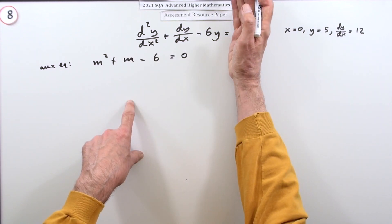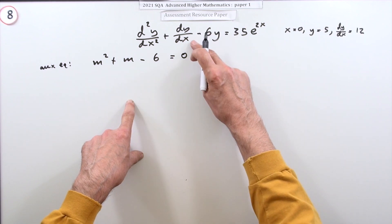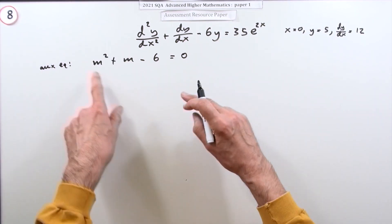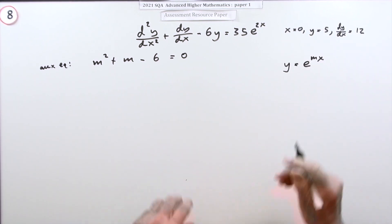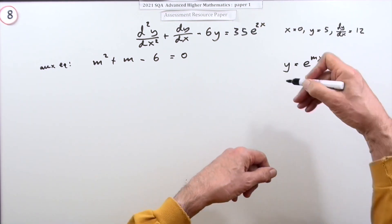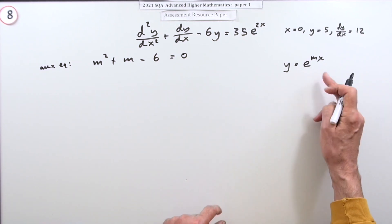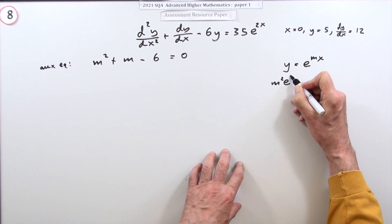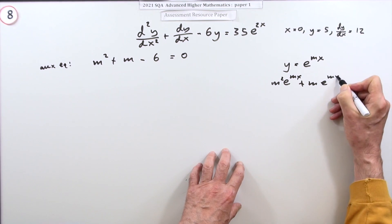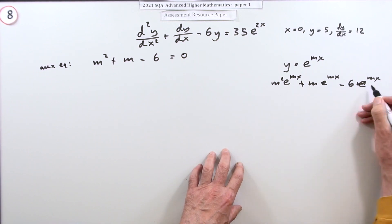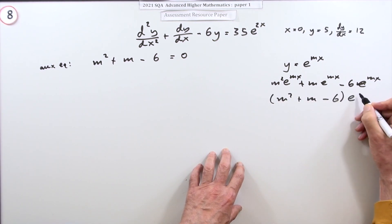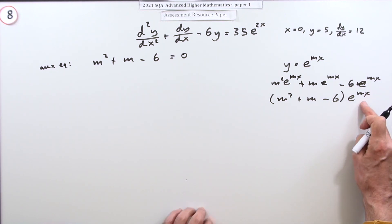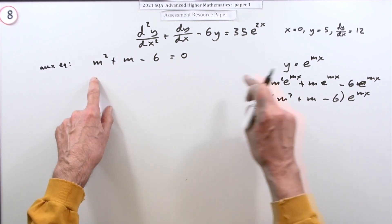The only way to have a function that, when differentiated twice, still adds up to zero is if it keeps regurgitating itself. So we assume a solution of the form e^(mx), since differentiating it just pops out factors of m: the first derivative is m·e^(mx), the second is m²·e^(mx). Substituting in gives (m² + m − 6)·e^(mx) = 0. Since e^(mx) can never equal zero, the bracket must equal zero — that's why we use the auxiliary equation.